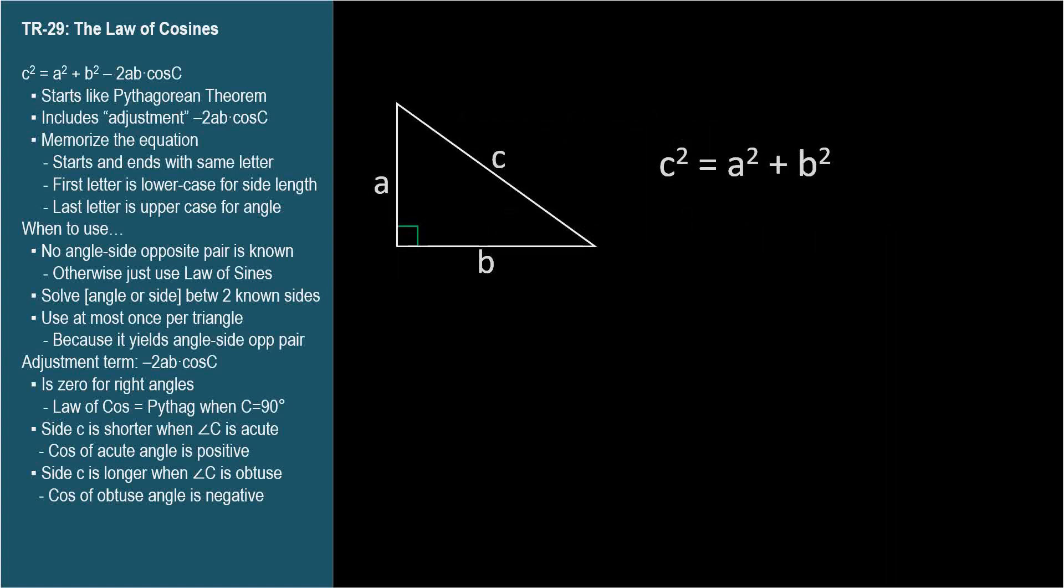The Law is so similar to the Pythagorean Theorem, I want to show you what happens when we apply it to a right triangle. From the Pythagorean Theorem, we know that c squared equals a squared plus b squared. The Law of Cosines works for any triangle, so it should work for this one. Can you finish the Law of Cosines? Minus 2ab cosine C.